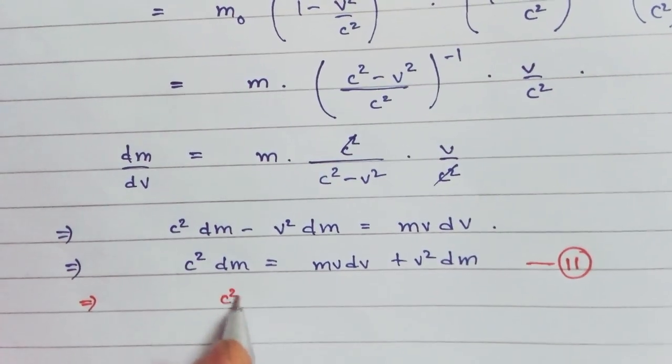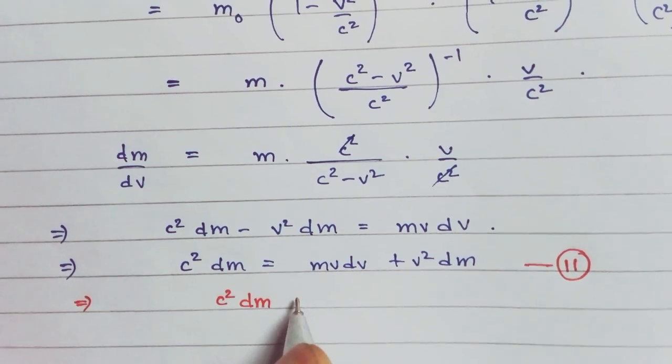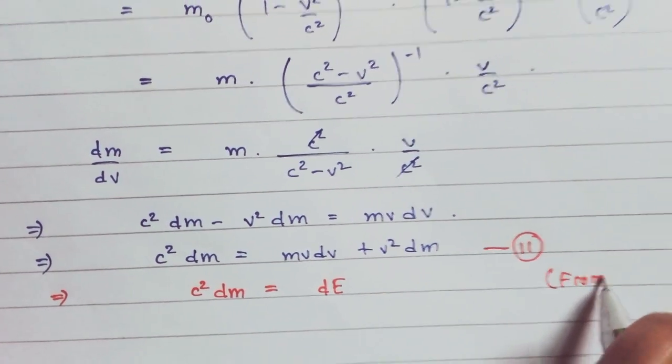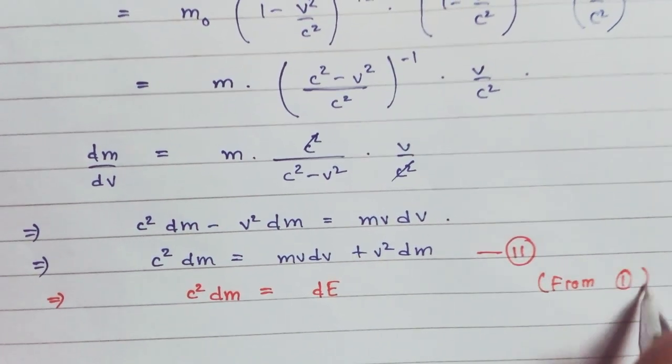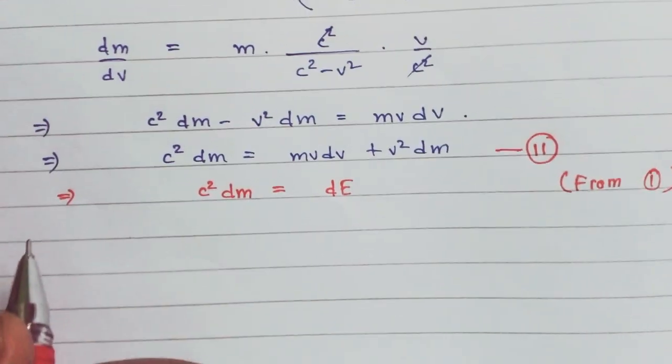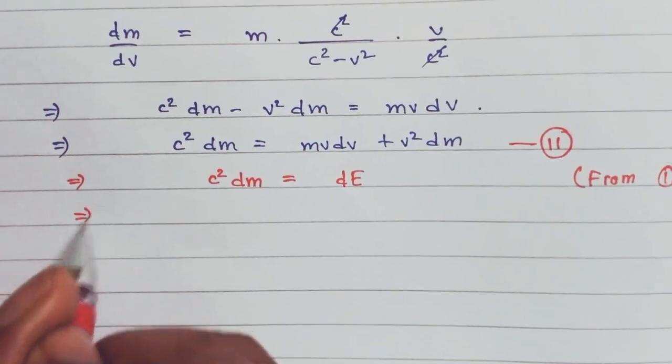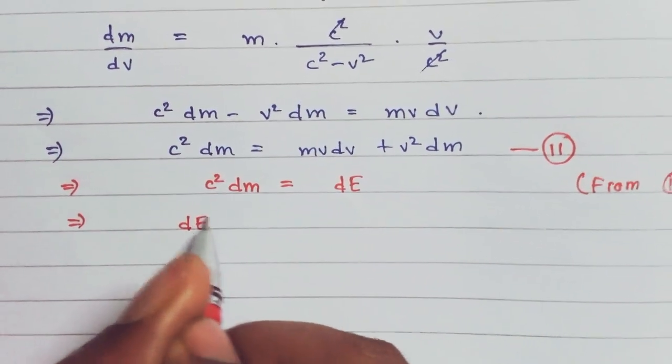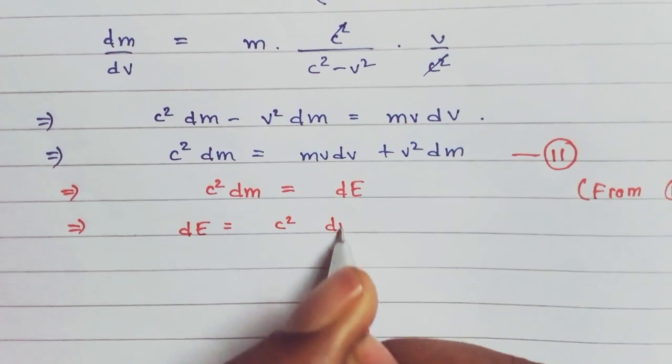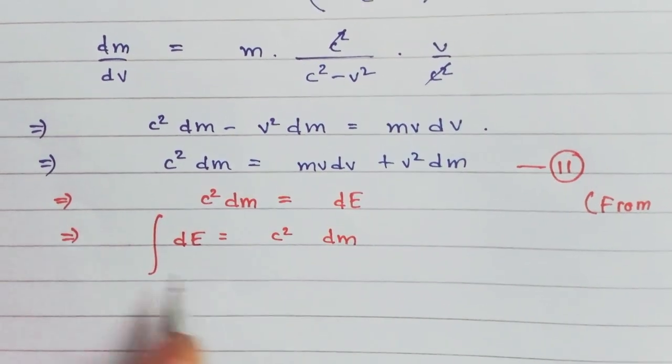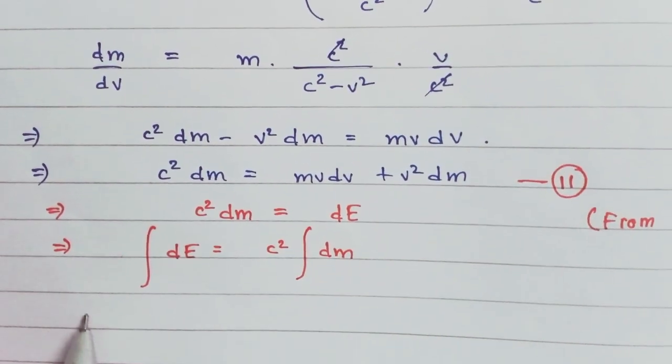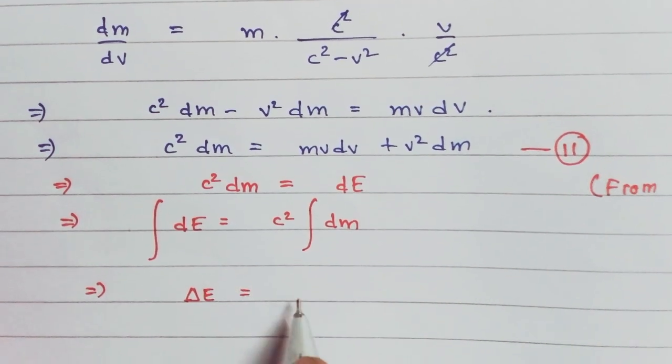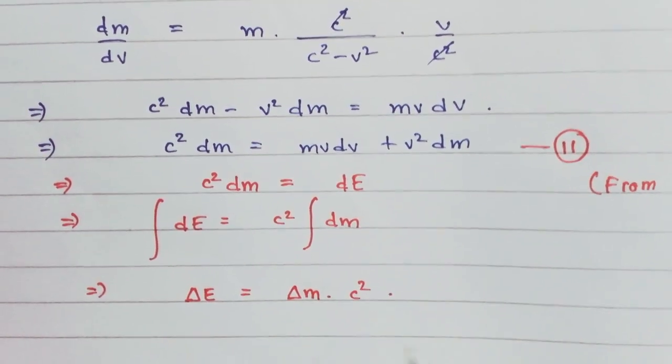We can write C squared dm equals dE from equation one. Now time to integrate it. Integrate: dE equals C squared dm, which gives dE equals dm times C squared.